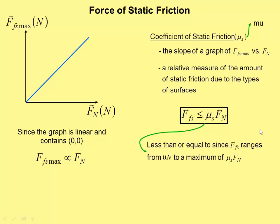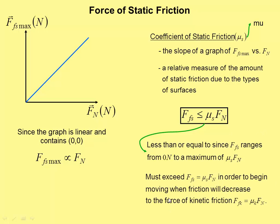Which means that in order to get something moving, you must exceed this force in order to get something moving. And then once it's moving, it'll move with the lower amount of kinetic friction. It's easier to keep something moving than to get it moving.